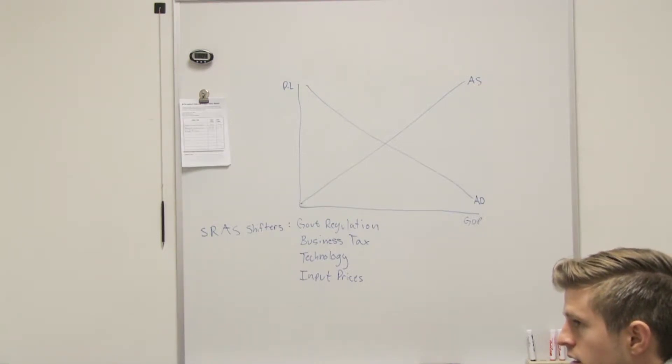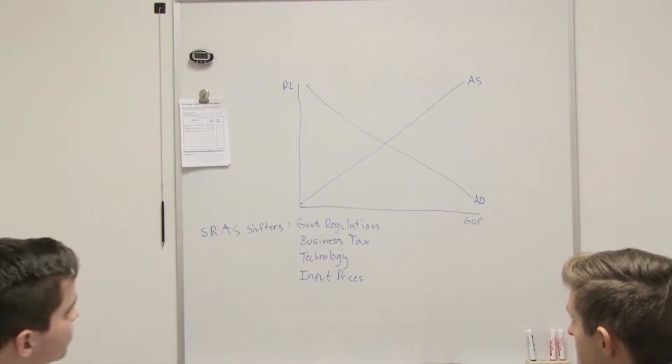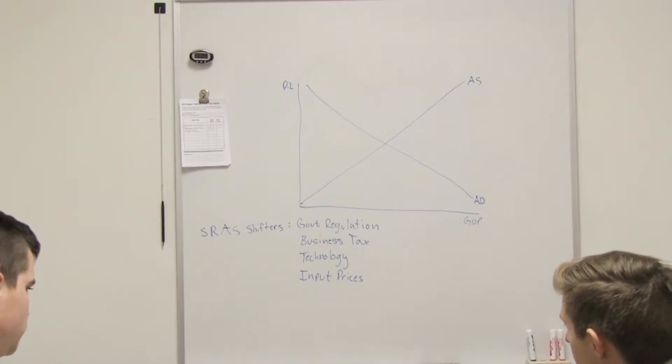So anytime... I remember Brother Webb gave us this worksheet that we were supposed to determine if it was aggregate supply or aggregate demand and if it was going to go left or right. And basically what I gathered, he never said this, but what I gathered, maybe I'm wrong, was anytime we're dealing with supply, we're dealing with business. Anytime it's demand, we're dealing with the consumer. Yep. Okay. That's basically it.